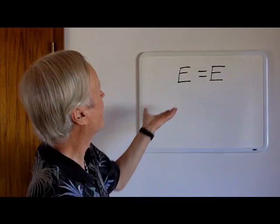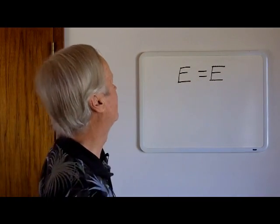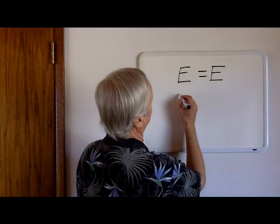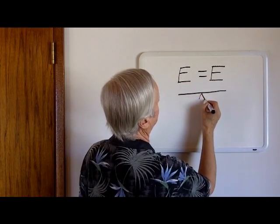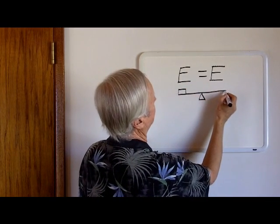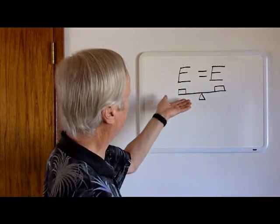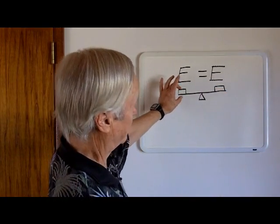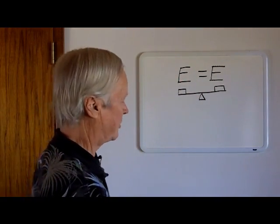For example, the E could be a pound of iron is equal to a pound of iron. And if we were to have a teeter-totter with a fulcrum, we put a weight here and an equal weight here. If these weights were precisely equal, the teeter-totter would be in balance.